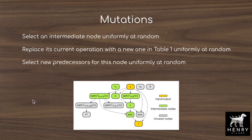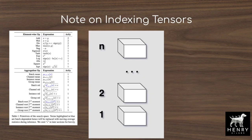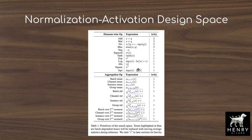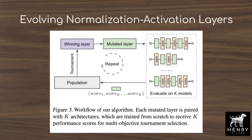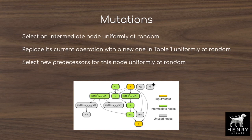A core component of the evolutionary search is how genotypes are mutated to render new phenotypes — in this case, different normalization activation layers. They select an intermediate node uniformly at random, such as a square root along a width-batch-channel axis, and replace its current operation with a new one from the primitives table, also uniformly at random. They also select new predecessors for the chosen node uniformly at random, changing which intermediate tensor is fed as input. This is how genotypes are mutated to produce better-performing normalization activation layers.